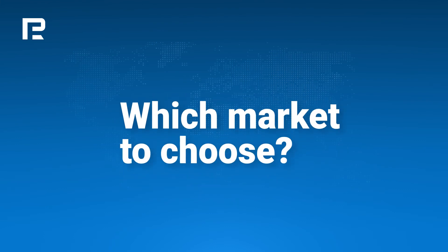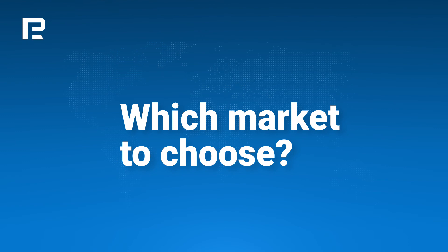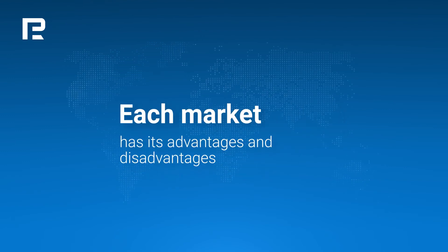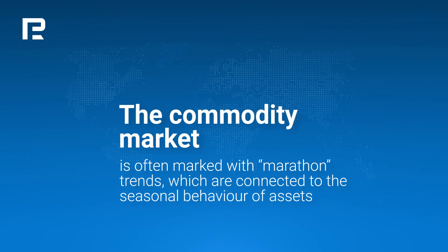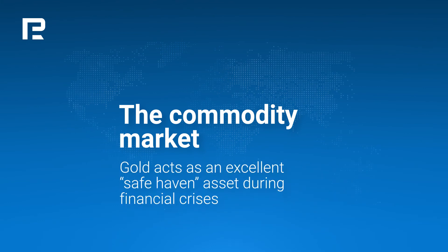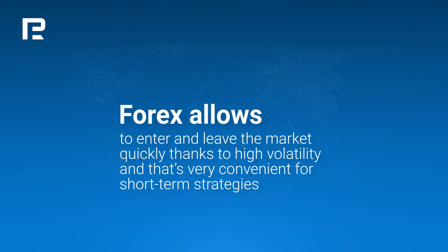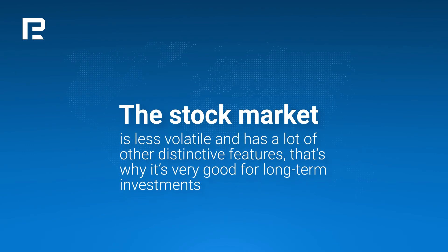When it comes to deciding what to trade — currencies, stocks, or commodities — there is no clear-cut answer. Each market has its advantages and disadvantages. As a rule, the commodity market is often marked with marathon trends connected to the seasonal behavior of assets, and gold acts as an excellent safe-haven asset during financial crises. Forex allows traders to enter and leave the market quickly thanks to high volatility, which is very convenient for short-term strategies. The stock market is not as volatile and has many distinctive features that are well suited for long-term investments.